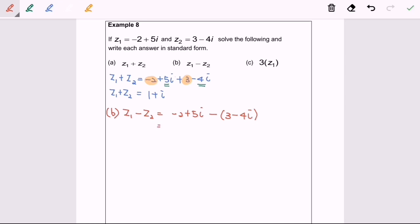Now we have to expand and at the same time arrange based on the parts. So negative 2 plus 5i minus 3 plus 4i. Please refer to the real part and simplify the situation and we have negative 5.